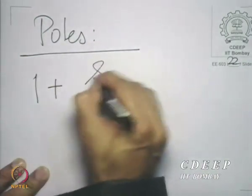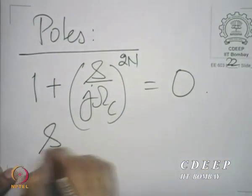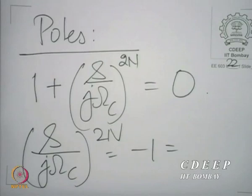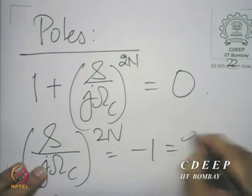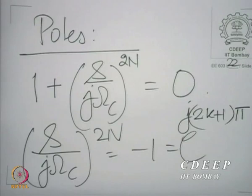Once we have H_analog(s) · H_analog(−s), it is easy to identify the poles and zeros of this analog system function. There are no zeros at all, and the poles are obtained by equating the denominator to zero: (s / j·omega_c)^(2n) = −1. To find the 2n-th roots, we write −1 as e^(j·(2k+1)·π) — any odd multiple of π gives −1.